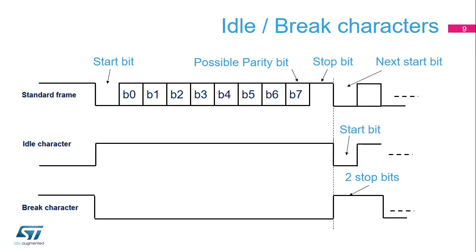The previous slide described a standard frame. This slide shows an example of an 8-bit data frame configured with one stop bit. An idle character is interpreted as an entire frame of ones; the number of ones will include the number of stop bits as well. A break character is interpreted as receiving all zeros for a frame period. At the end of the break frame, two stop bits are inserted.